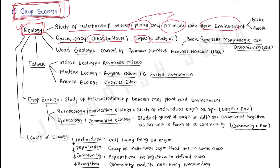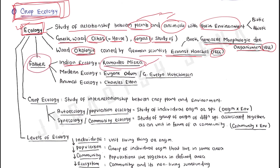So ecology is the study of the relationship between an organism and its surrounding environment. The term was coined by German scientist Ernst Haeckel in 1866, and he wrote a book called 'Generelle Morphologie der Organismen' in 1866. Ramdeo Misra is known as the father of Indian ecology.